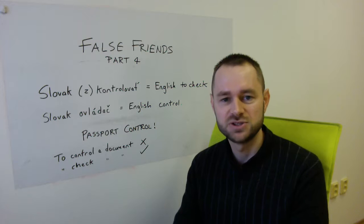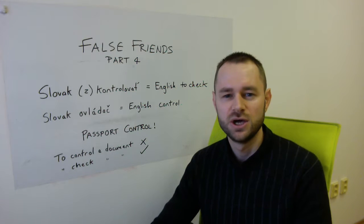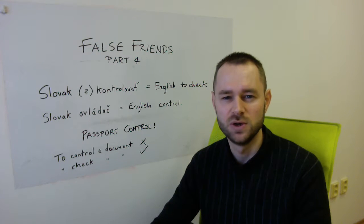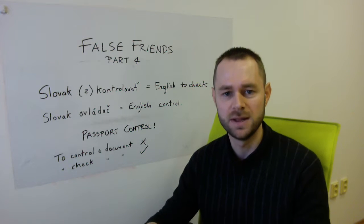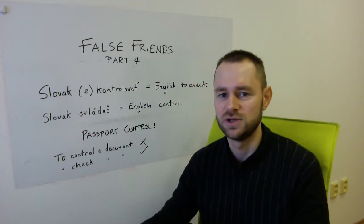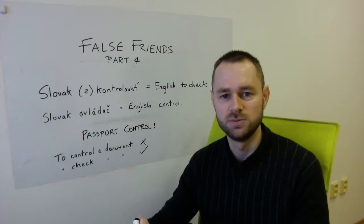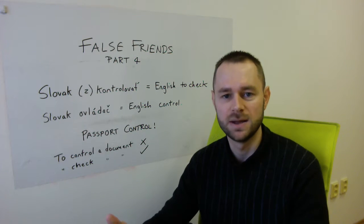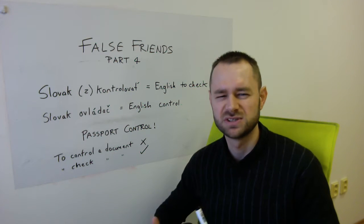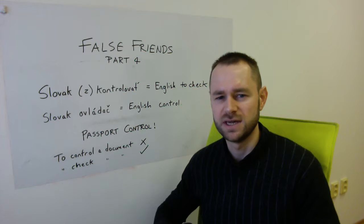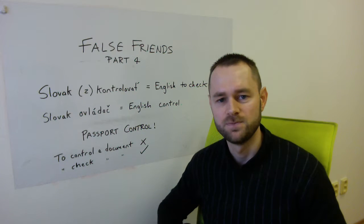The word 'control' can in some cases sound a bit negative. It's maybe when a government controls its people in the country — they're checking everything they're doing, but they may also have some way to manipulate them, which isn't always very good. They might make sure people do certain things because the government has a particularly difficult political regime. So when I hear 'control a document', it sometimes doesn't sound quite right — in English we just say you check a document.